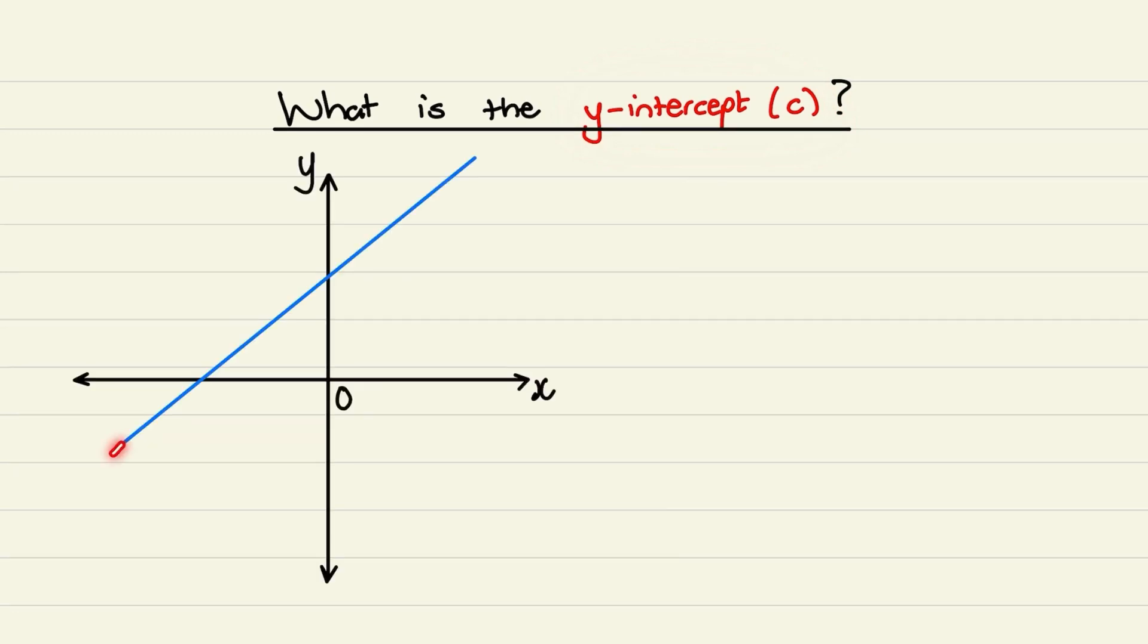So here we have a straight line on a Cartesian plane. And the y intercept is the point where the straight line crosses with the y axis. So it is simply the point of intersection between the line and the y axis.